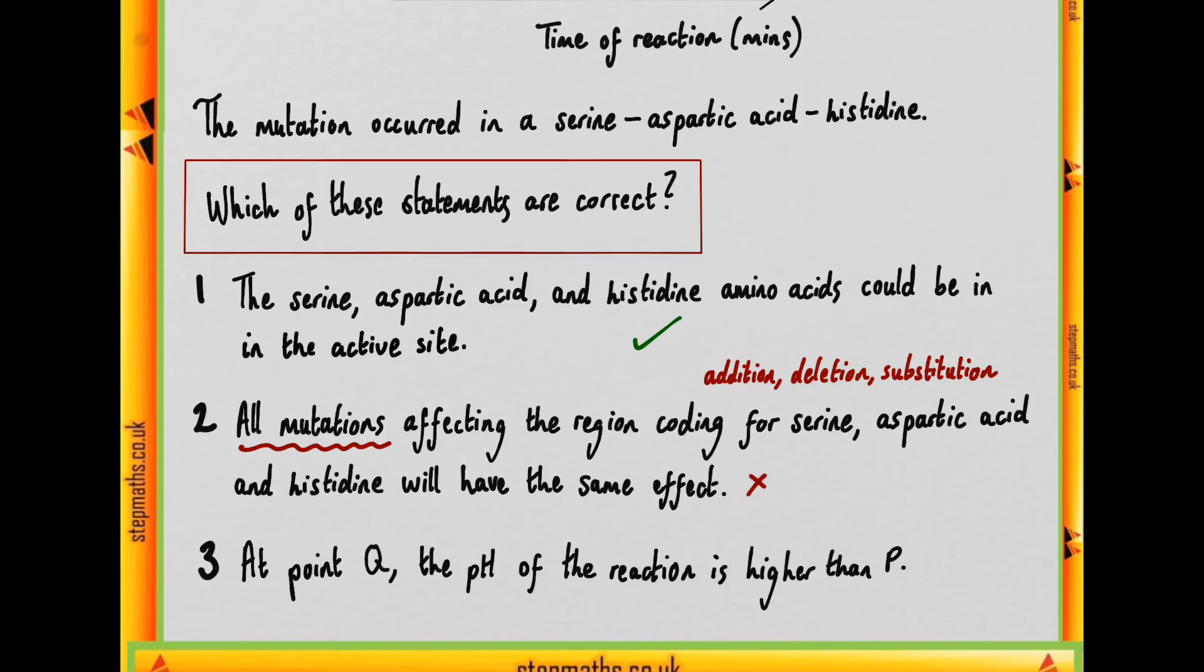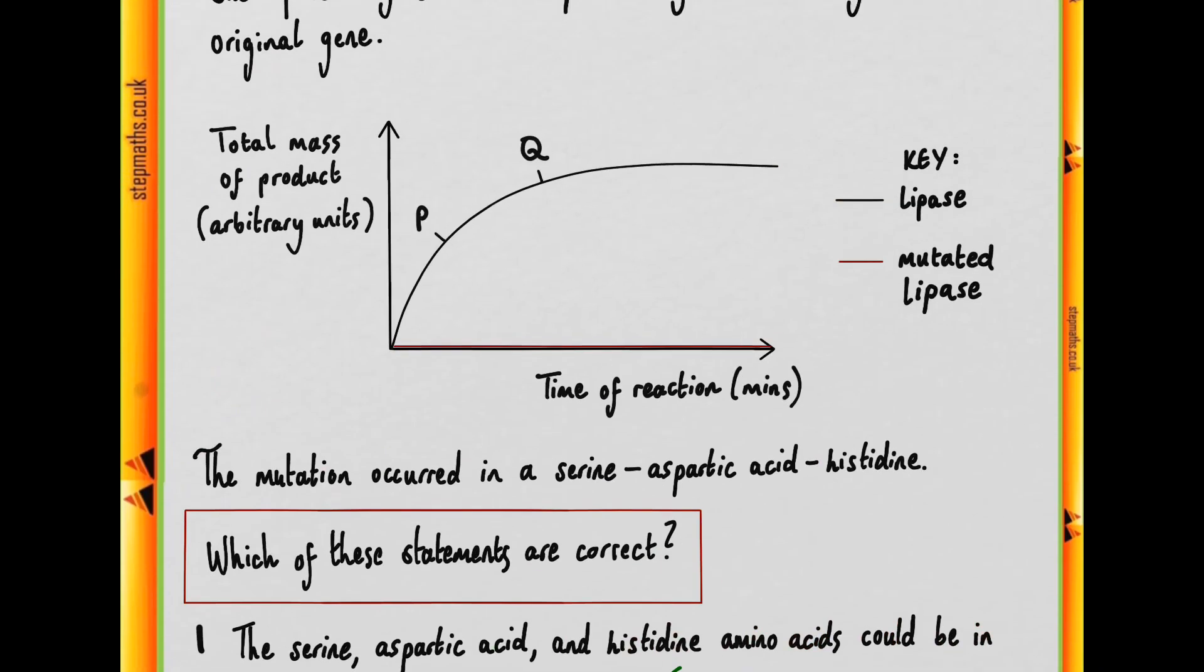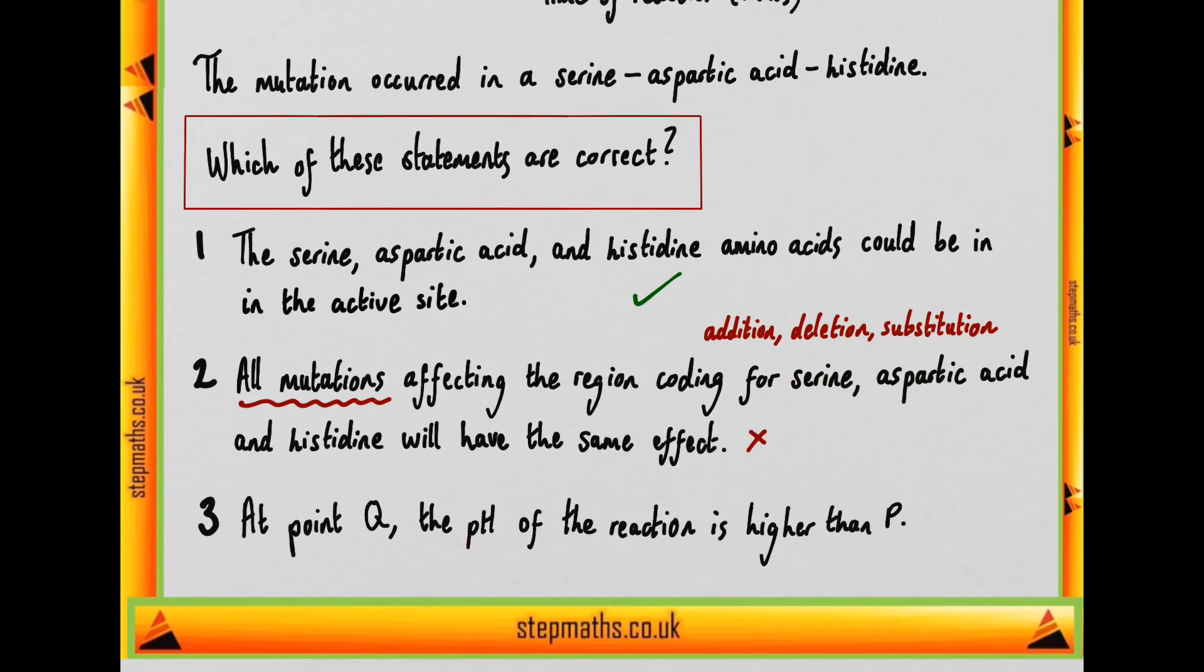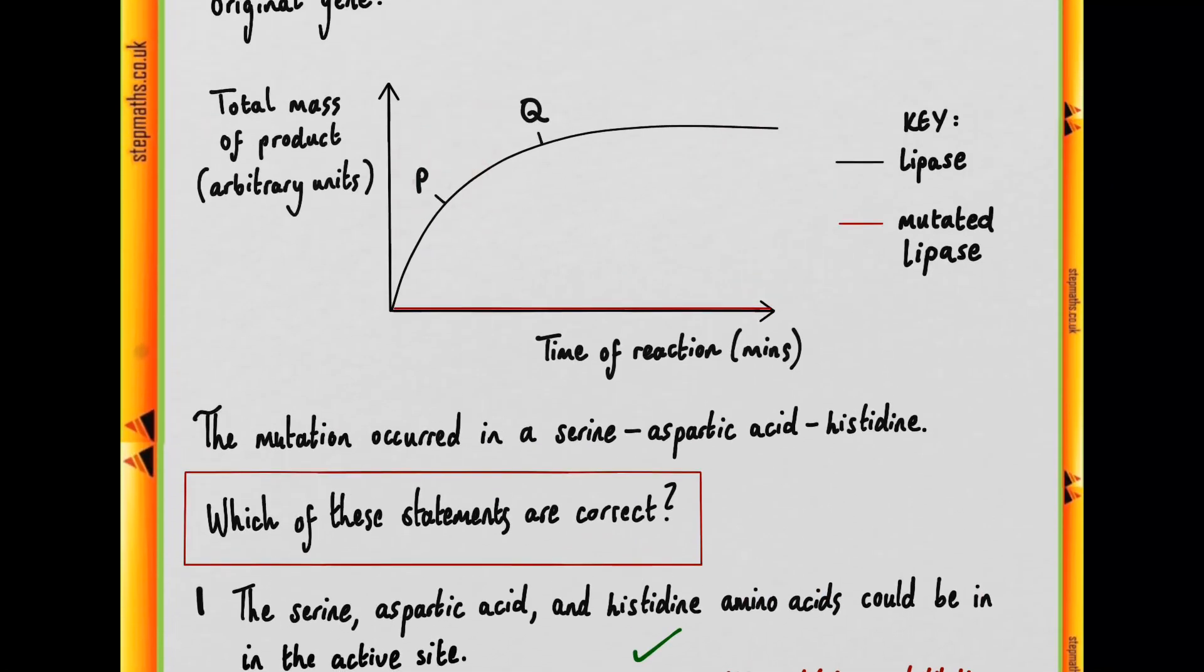And the third statement is that at point Q, which is further along here, the pH of the reaction is higher than at point P. So point P is earlier in the reaction.